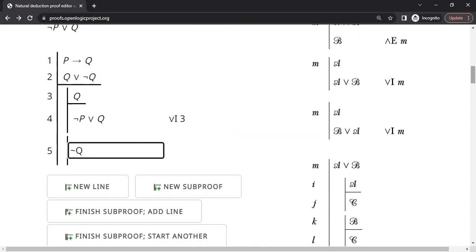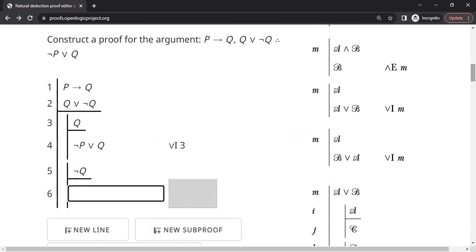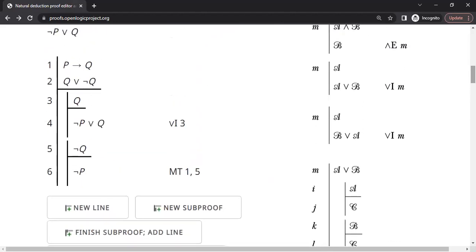Okay. The NOT Q component is a tricky one, but we can use modus tollens that we learned earlier. If it is NOT Q, right? We can say NOT P because of modus tollens. We are applying modus tollens line number 1 and 5. Let us check the proof. Yeah. Very good. We are doing okay.